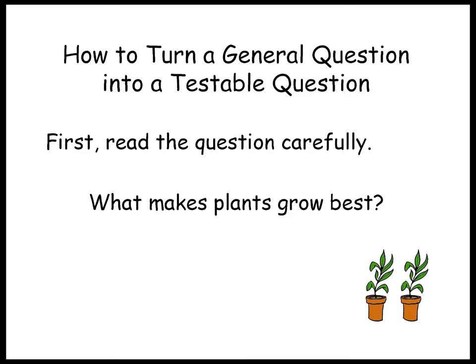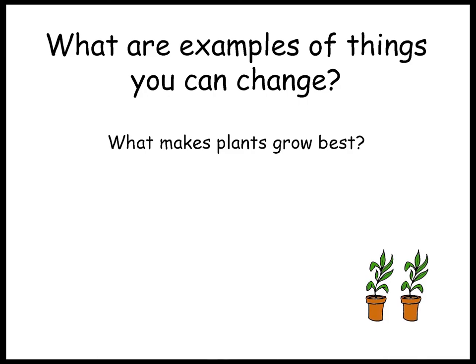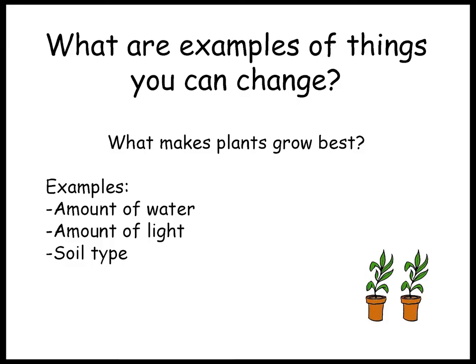How can we turn a general question into a testable question? First, read the question carefully: What makes plants grow best? Next, think of a cause and an effect related to your question. The idea is that you can change something to affect how a plant grows. The cause would be the thing you are changing; the effect would be how the plant grows. Examples of things you can change: the amount of water, the amount of light, the kind of soil.